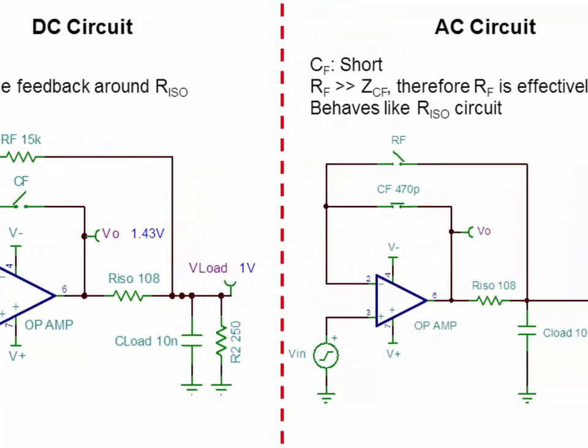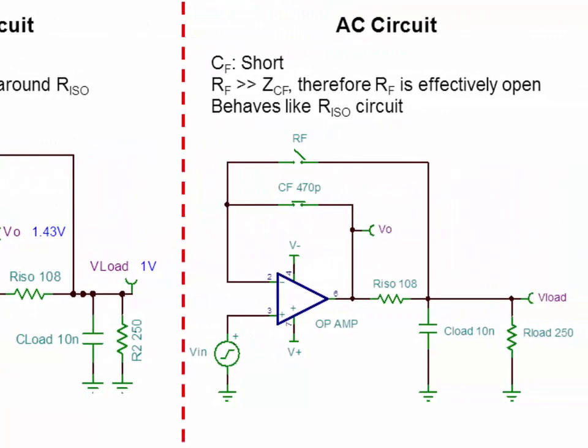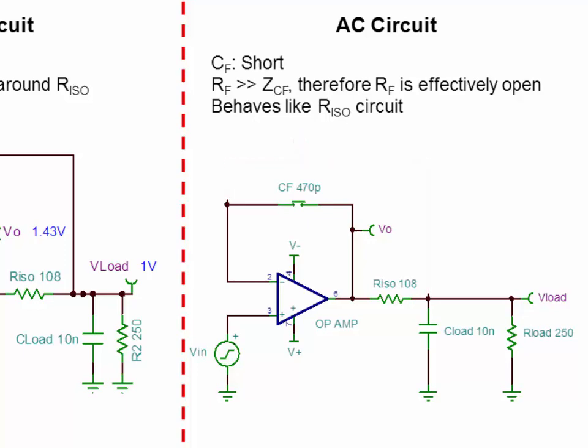At AC frequencies, CF acts as a short. When this happens, RF can be thought of as an open circuit because the impedance of CF, XCF, will be much smaller than the impedance of RF. Therefore, at AC, this circuit looks effectively the same as the standard R-ISO circuit.